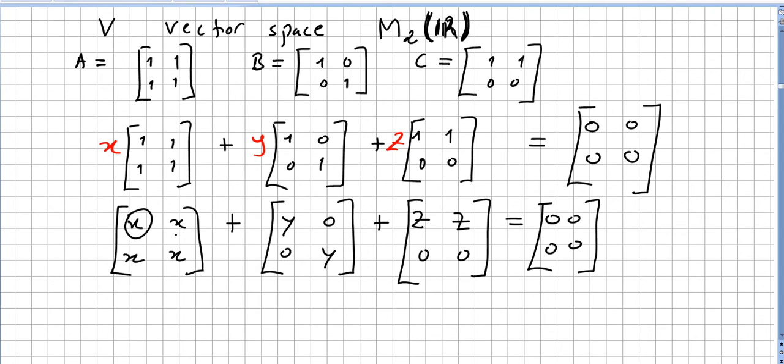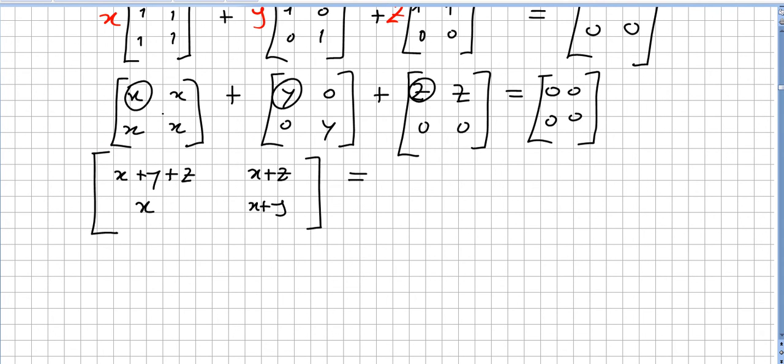Now we are going to add x plus y plus z. We are going to do a single matrix. So that will be x plus y plus z. Then x plus 0 plus z, x plus z. x, 0, 0. And x plus y plus 0, x plus y. It has to be equal to the 0 vector of 0 0 0 0.